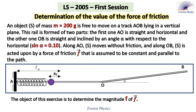An object of mass 200 grams is free to move on a track AOB lying in a vertical plane. This rail is formed of two parts: AO is straight and horizontal, and OB is straight and inclined by an angle alpha with respect to the horizontal, where sine alpha equals 0.1. Along AO, the object moves without friction, and along OB it is acted upon by a constant friction force F parallel to the path. The objective is to determine the magnitude F of the friction force.